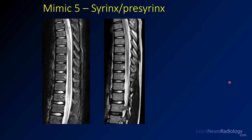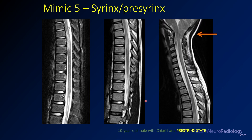Mimic number five is syrinx or pre-syrinx. A syrinx involves either expansion of the central canal or edema around it, most often related to CSF flow abnormalities. In this mid-thoracic spine case, we have T2 abnormal signal on both fat-sat and non-fat-sat sequences. Looking at the cervical medullary junction in this 10-year-old, there's a Chiari malformation with very low cerebellar tonsils. The abnormal CSF flow caused by compression at the fourth ventricle outflow tracts is producing the syrinx distally. Be sure to look at the rest of the spinal cord for CSF flow abnormality clues.